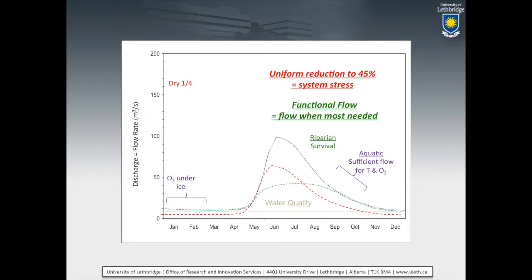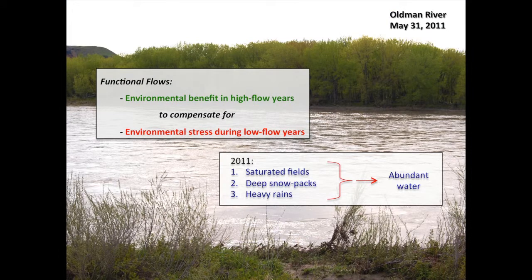The functional flow argument is really flow when you need it the most for these particular functions. Here you can see this green line which shows what a functional flow approach would be — different from the current WCOs. What it would really mean is looking for management opportunities that would allow you to deal with these pieces. It looks like there are opportunities to do something different. The whole approach is about having environmental benefit from the high flow years that compensate for things in the low flow years — capitalizing on those high flow years to make us better performers in other years and compensate for that stress.